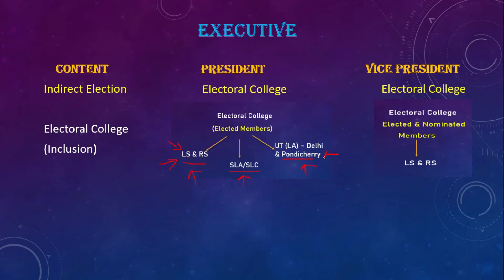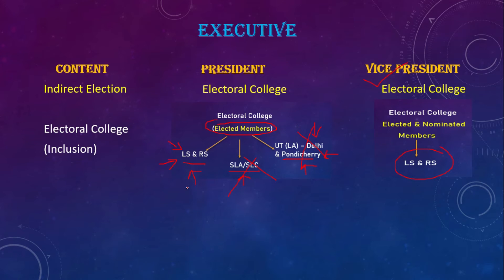You can choose the elected members. This is a very important question. You can choose the Vice President. The Electoral College includes both Houses of Parliament. Three categories of members are involved: appointed, nominated, and elected.